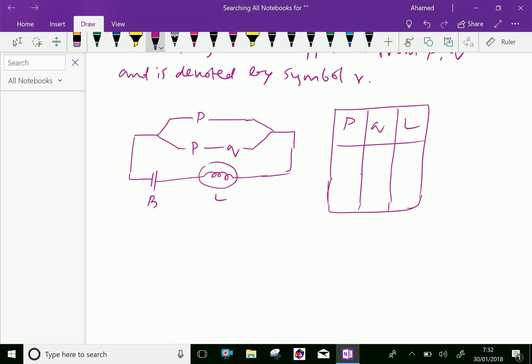P is open, Q is also open. Then lamp is not blowing, lamp is off. And P is open, Q is closed. Still, because that current is not flowing through P and Q, so lamp is not blowing.